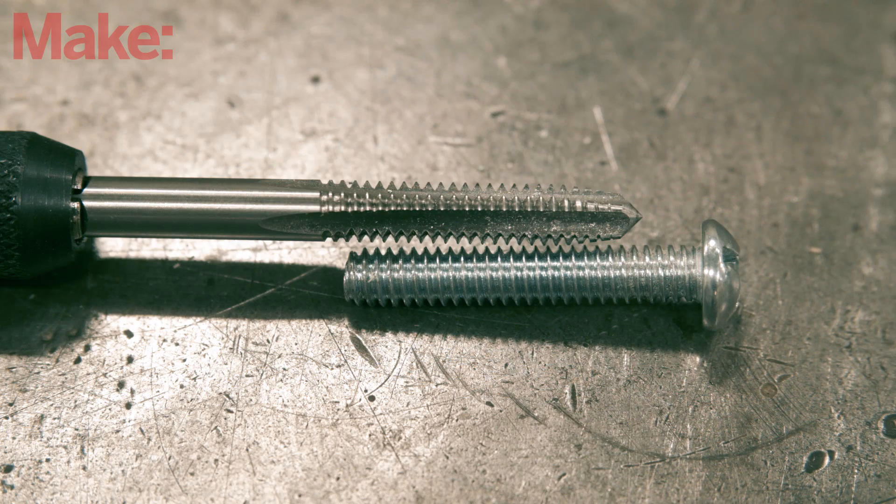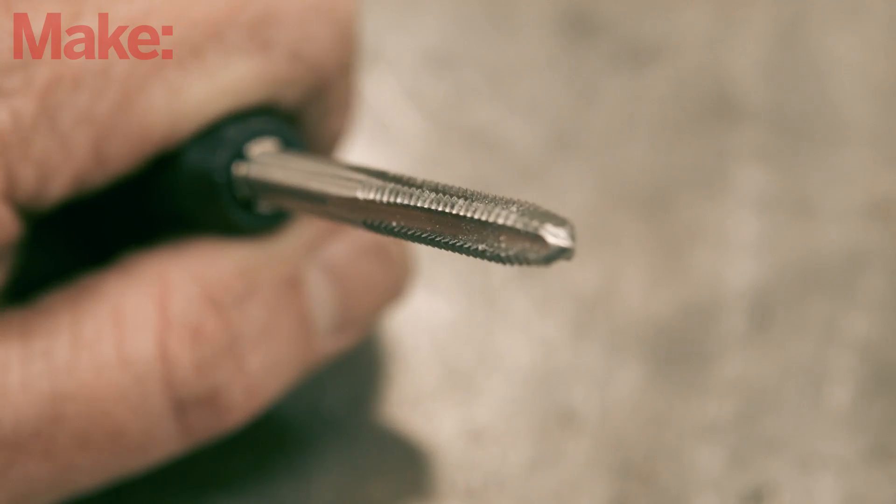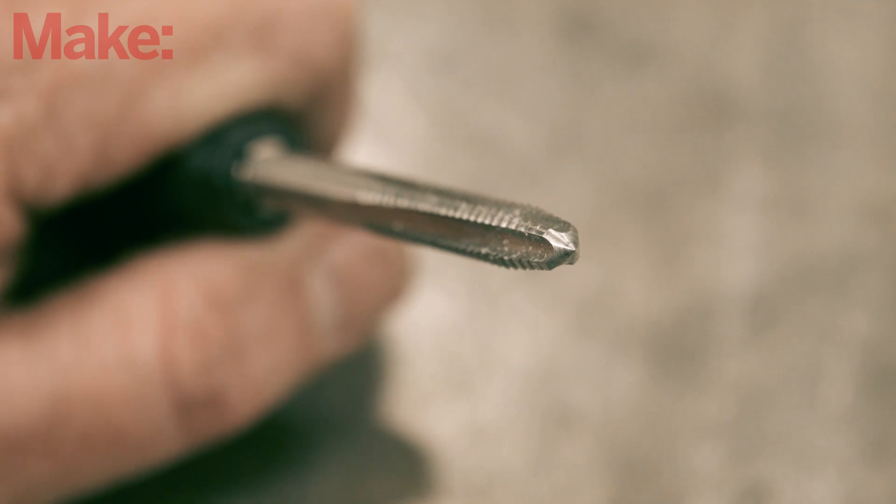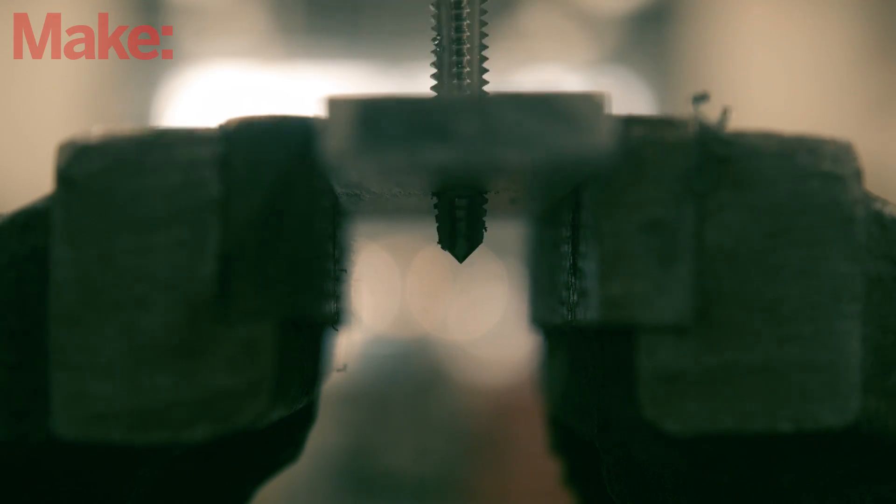While they look similar to bolts, taps are typically made of high-speed steel that have long channels ground into the sides, leaving gaps in the threads. As the tap turns into a hole, these channels allow chips that are carved out of the material to break free and be ejected.